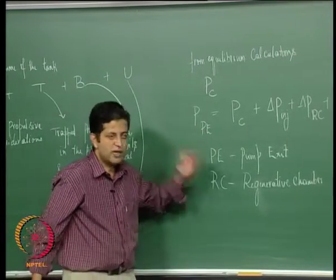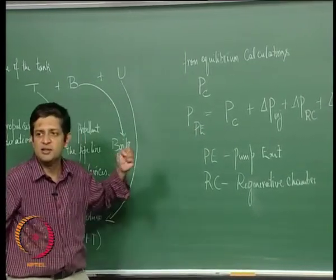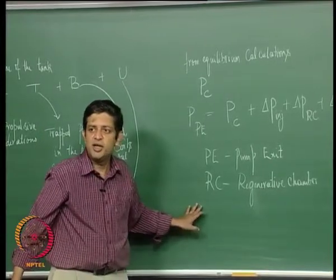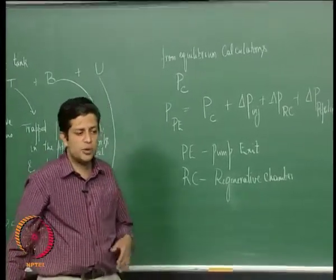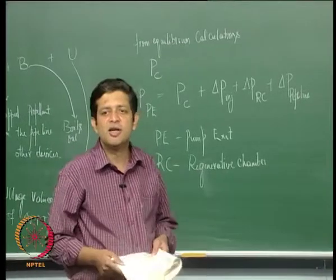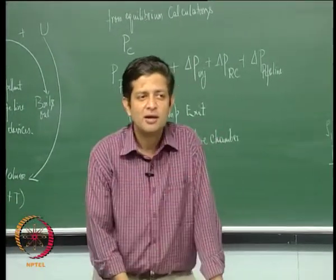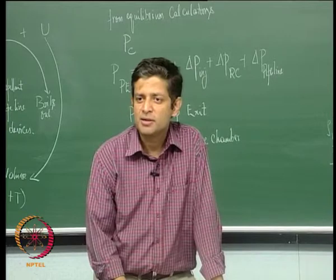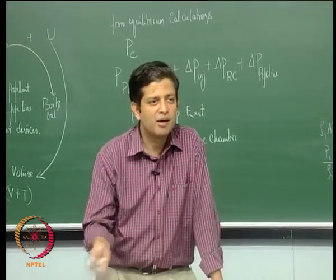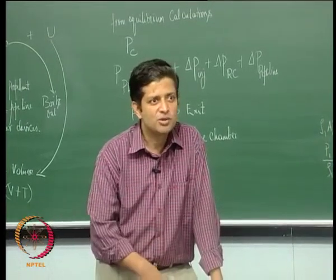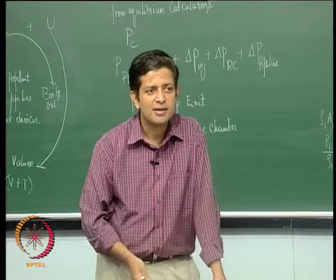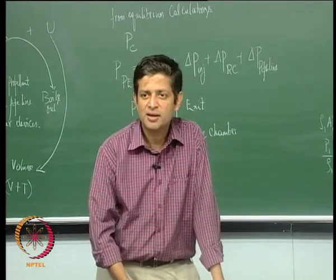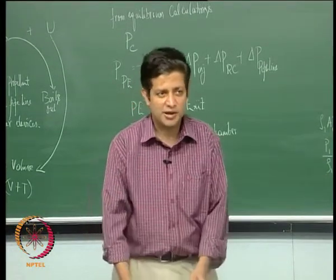So we know the mass flow rate of the propellants and we know the pressure at which they need to be delivered. From these two things we can calculate the pump power required, and then based on efficiencies we can calculate what turbine power needs to be supplied to it.